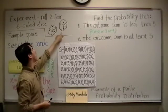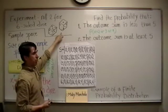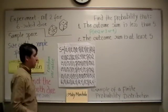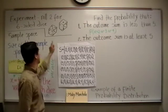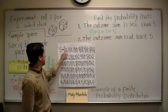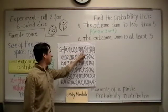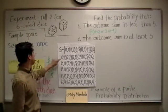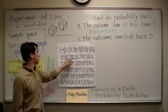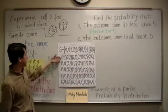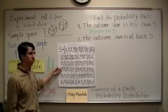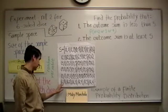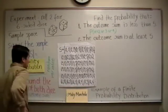We begin by identifying the sample space. Since we're rolling two fair distinguishable dice, outcomes consist of ordered pairs where each die shows a value from one through six. So we list all possibilities: (1,1), (1,2), through (1,6), then (2,1) through (2,6), continuing through (3,_), (4,_), (5,_), and finally (6,1) through (6,6).